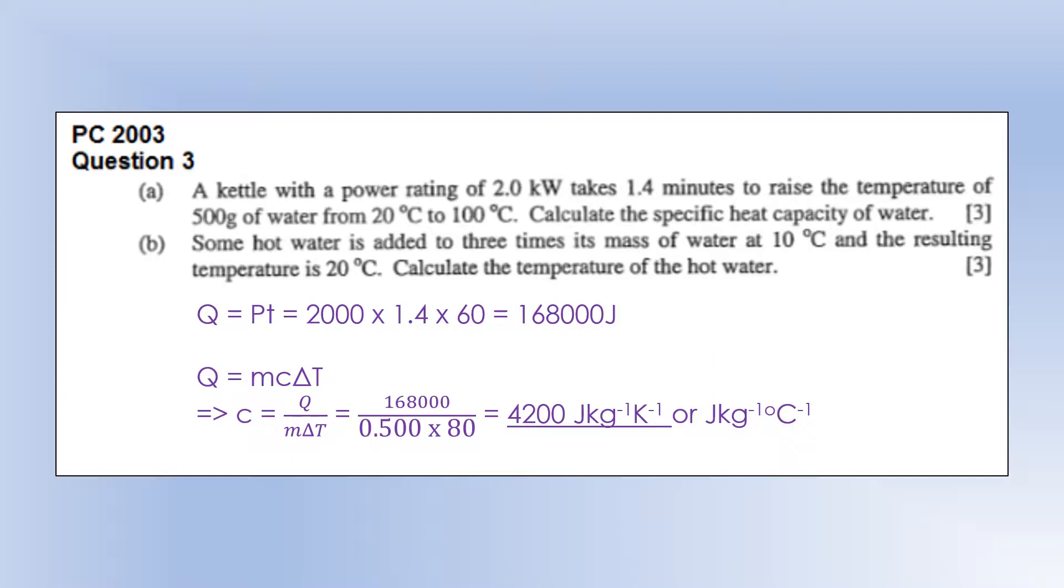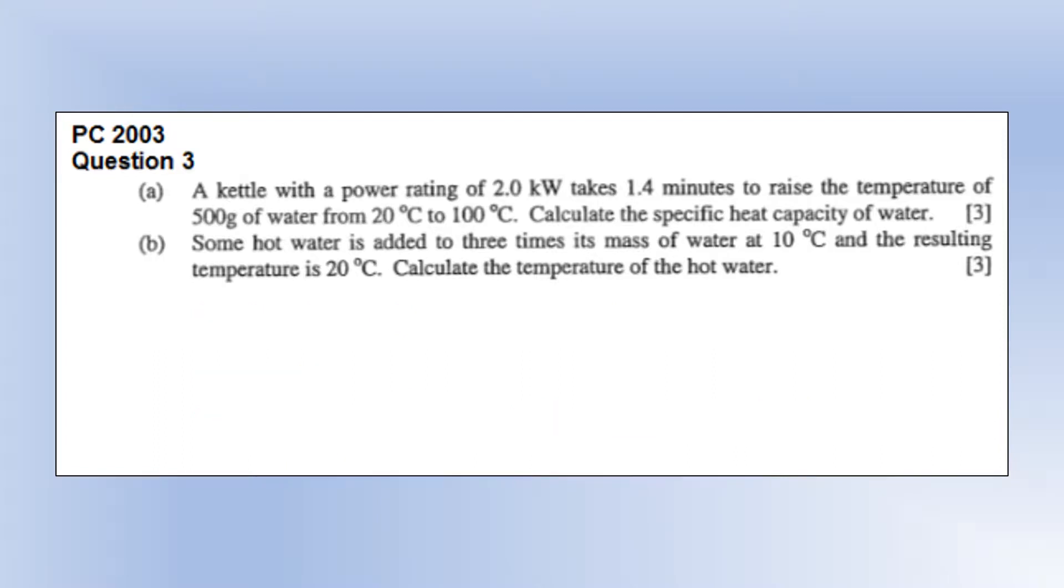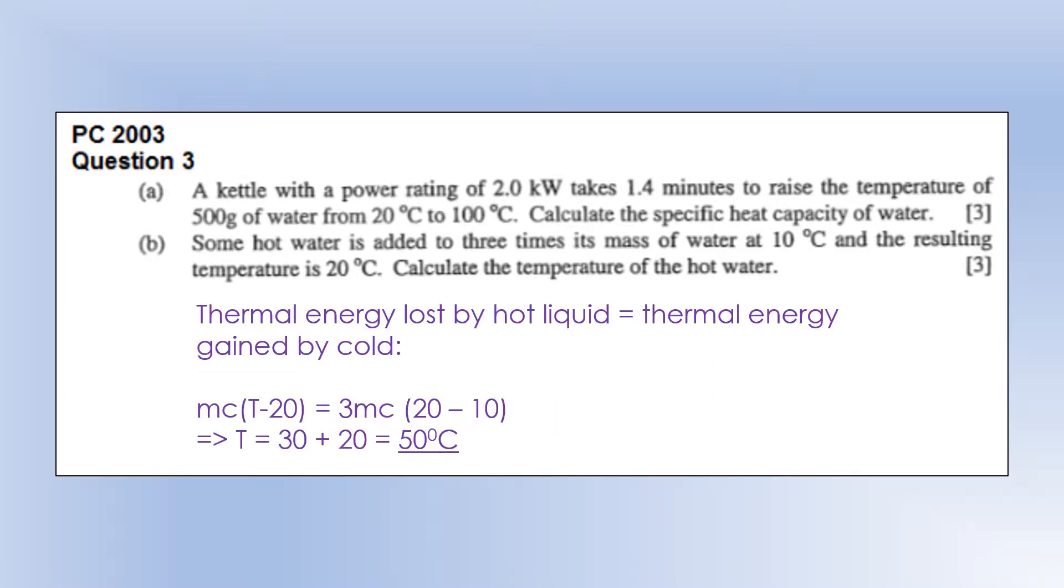Let's move on to the second part. Some hot water is added to 3 times its mass of water at 10 degrees, and the resulting temperature is 20 degrees centigrade. Calculate the temperature of the water. Whatever we do when we mix two liquids, they'll eventually become the same temperature. And what that means is the energy lost by the hot liquid must be equal to the energy gained by the cold.